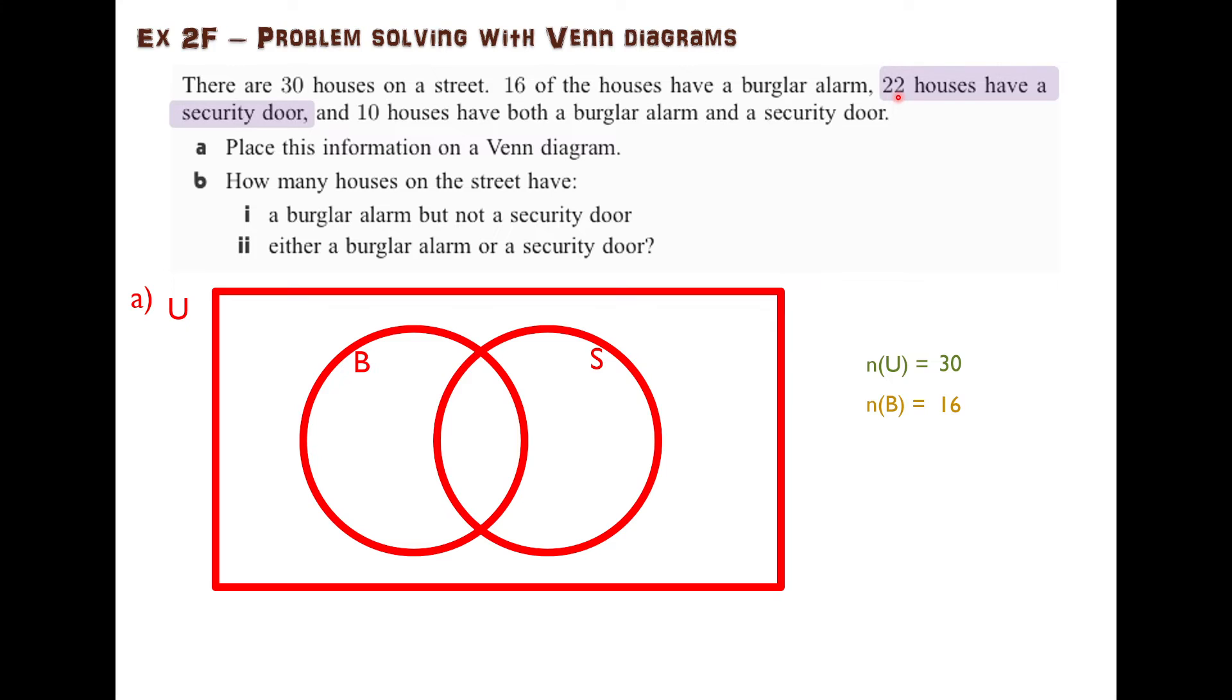22 houses have a security door. So similar, the number of elements in S is 22. And finally, 10 houses have both a burglar alarm and a security door. So that's this region here.